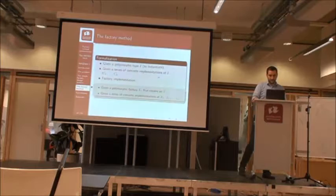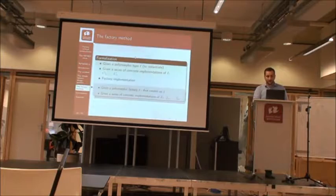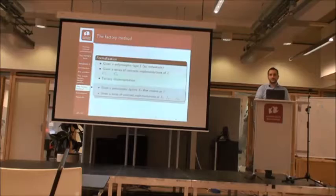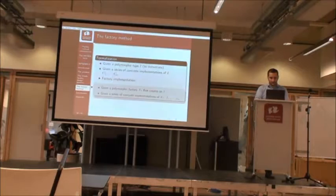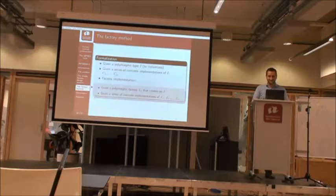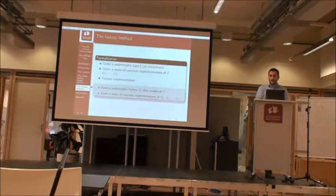Here's an example: given a polymorphic type — say, a Window — and a series of concrete classes like HighContrastWindow, PlasticStyleWindow, FlowerWindow — you define a polymorphic factory interface or abstract class that has a method 'create' or 'instantiate', which returns an instance of the polymorphic type. Each concrete factory provides its own implementation of that method, selecting and constructing the appropriate concrete type.